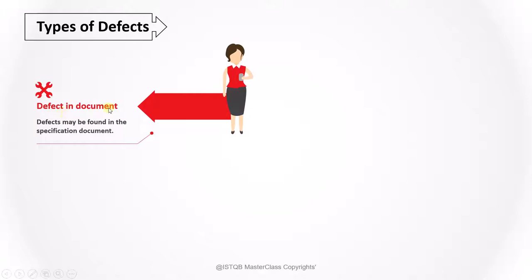Moving to the last point: what are the different types of defects you can find? The first point is defects in document. Defects may be found in the specification document because it requires lots of analysis. Without analyzing, you cannot draw a cause-effect graph. And while analyzing, it is more likely that you will find the defect.